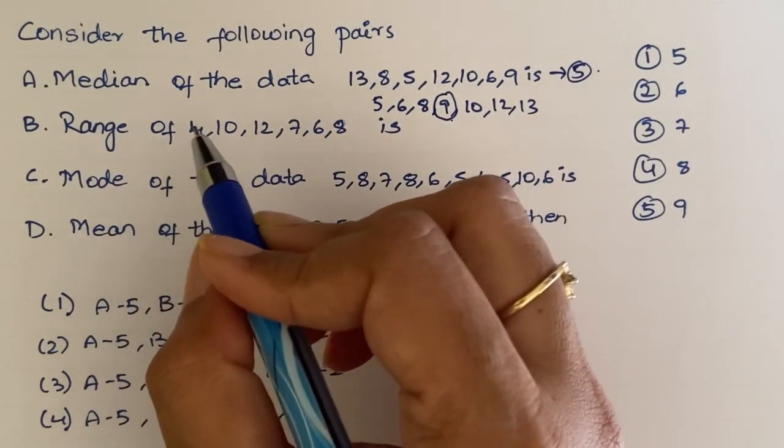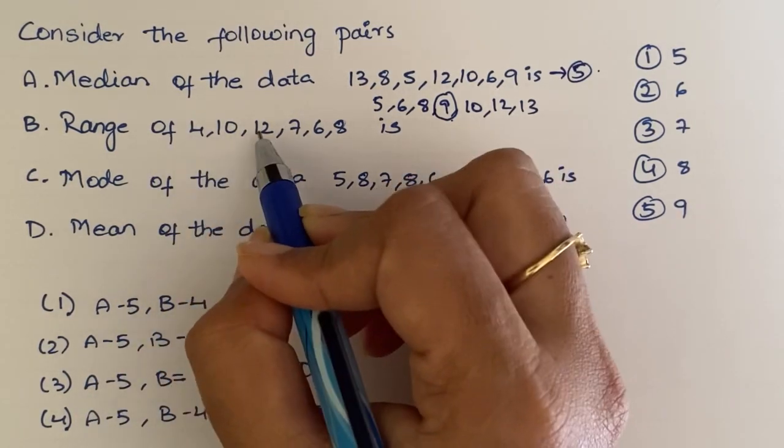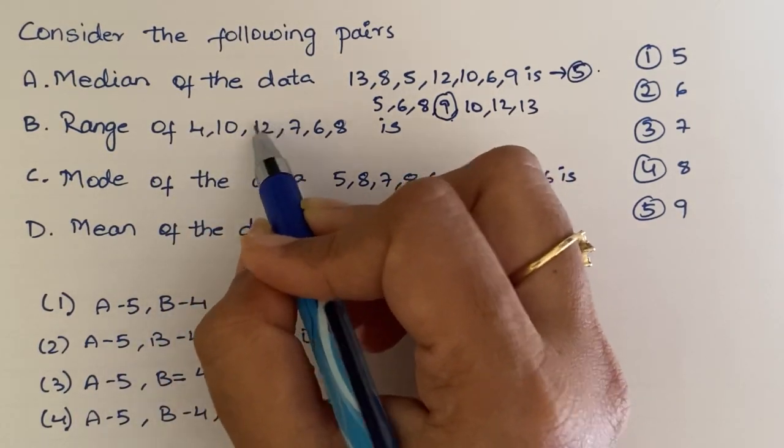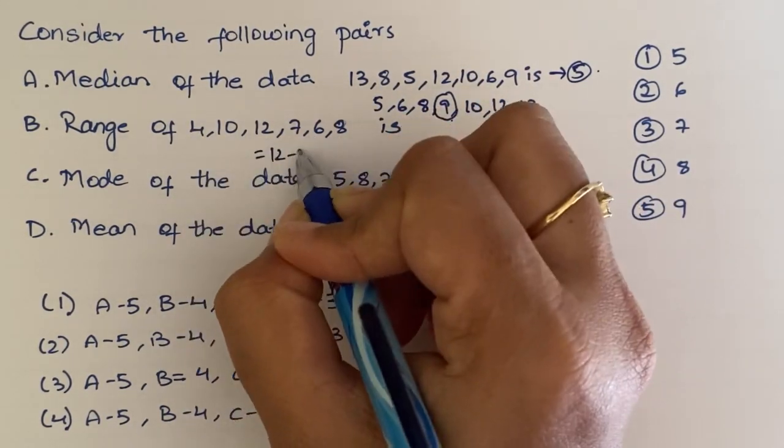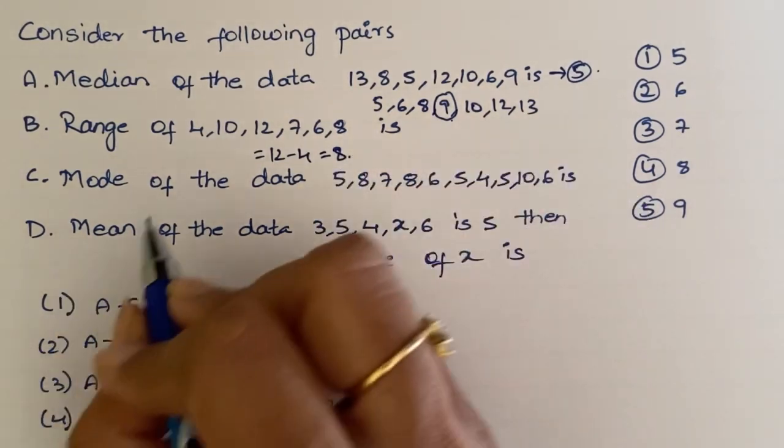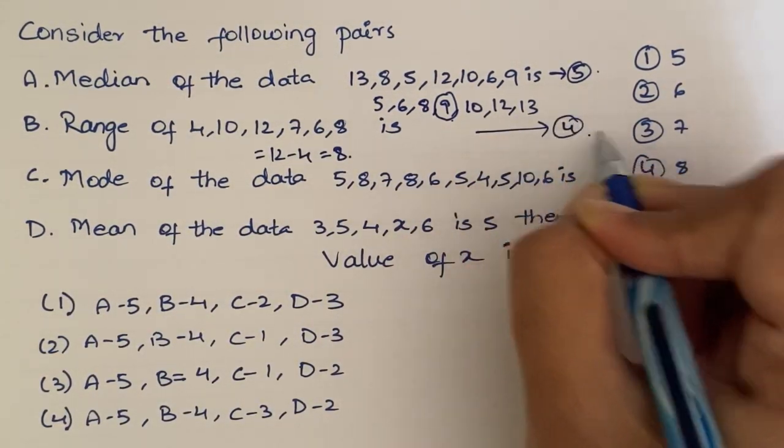Next. Range of - range means largest number minus smallest number. So, 12 is the highest number. 12 minus smallest number which is 4. So, 8 is the range. 8 is here in option 4. So, second one is fourth option.